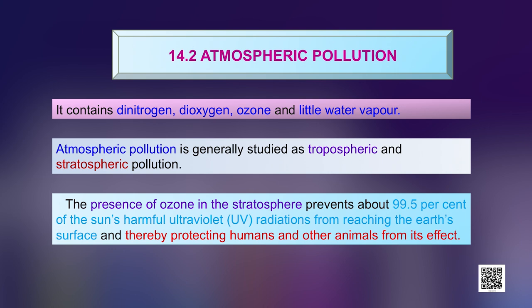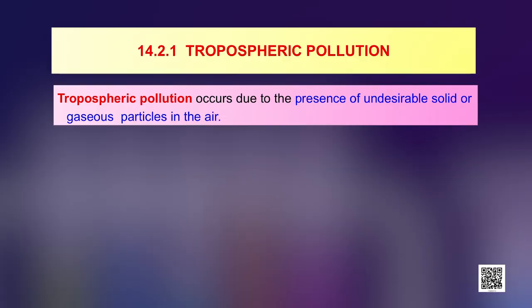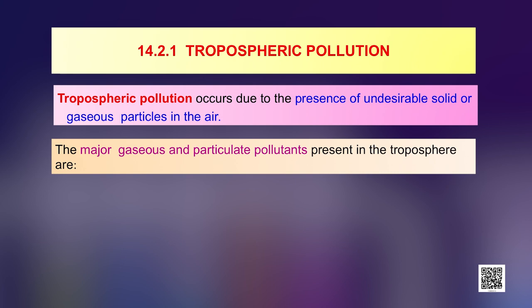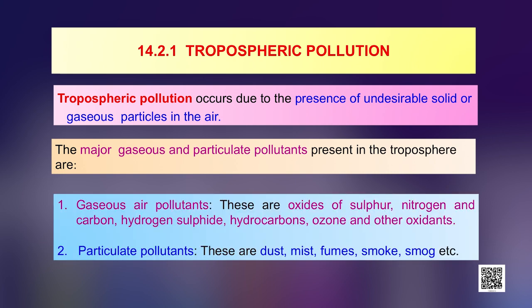The presence of ozone in the stratosphere prevents about 99.5 percent of the sun's harmful ultraviolet radiations from reaching the earth's surface, thereby protecting humans and other animals from its effects. In this session, we will be discussing about tropospheric pollution arising from gaseous air pollutants, while tropospheric pollution due to particulate matter will be dealt in the next session. The tropospheric pollution occurs due to the presence of undesirable solid or gaseous particles in the air. The major gaseous pollutants present in the troposphere are oxides of sulfur, nitrogen and carbon, hydrogen sulfide, hydrocarbons, ozone and other oxidants.